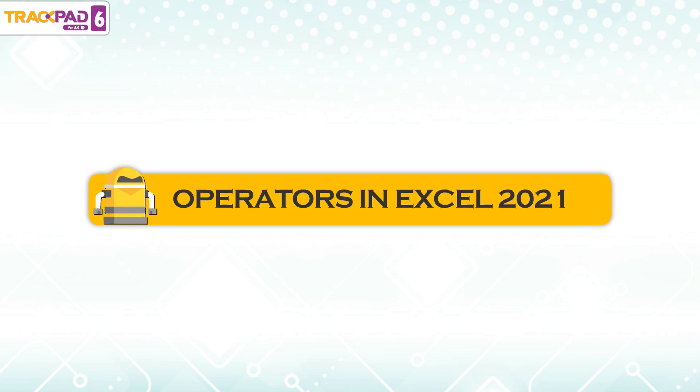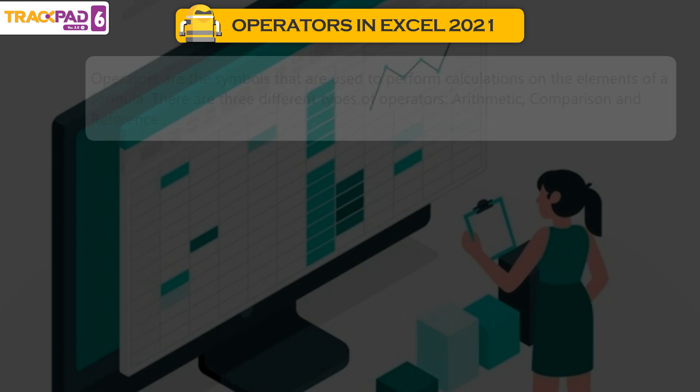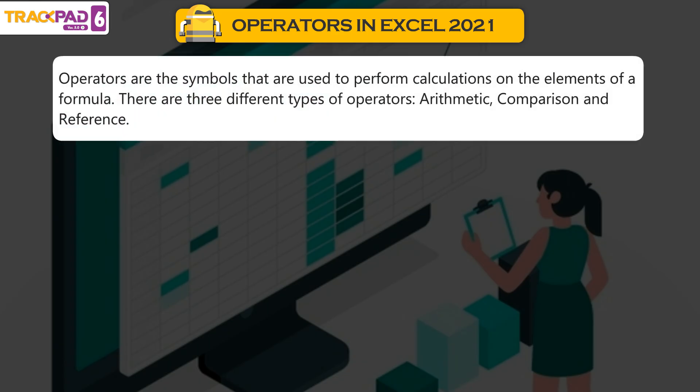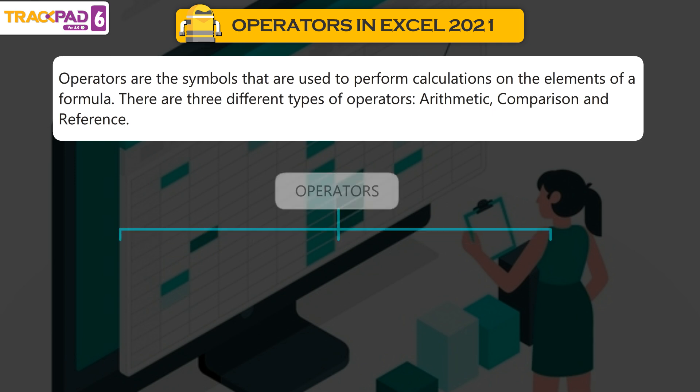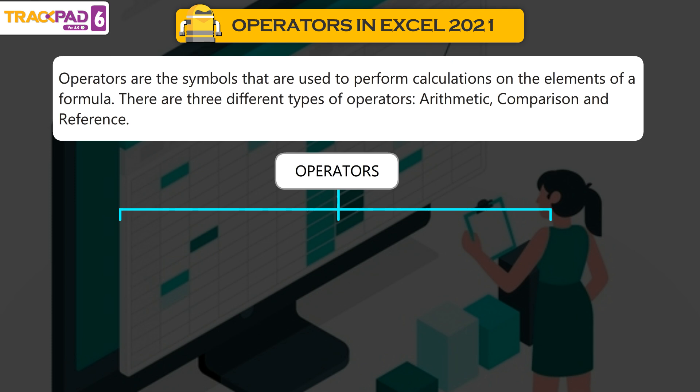Operators in Excel 2021. Operators are the symbols that are used to perform calculations on the elements of a formula. There are three different types of operators.